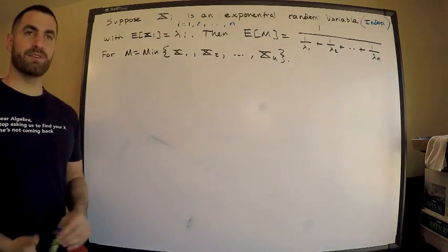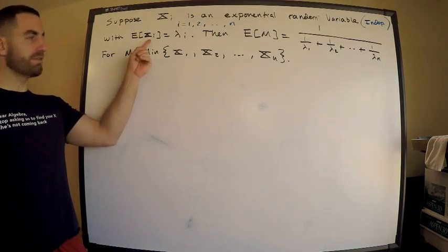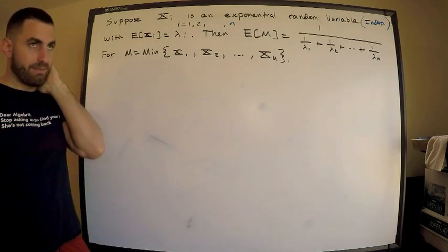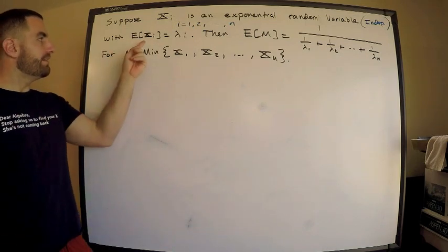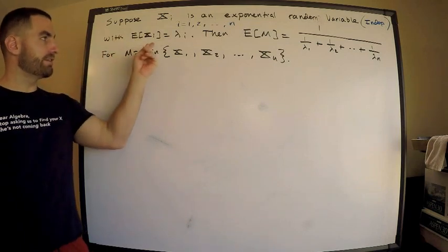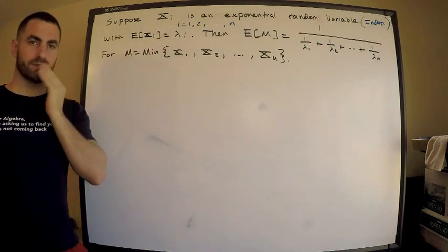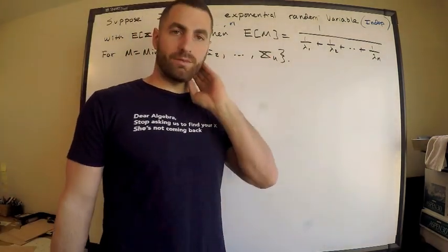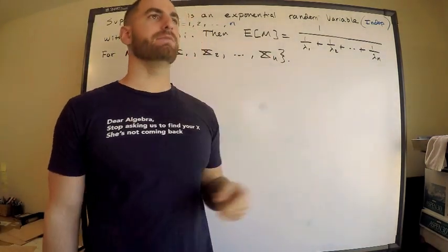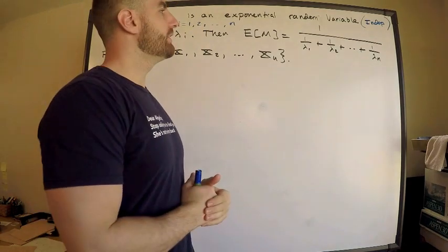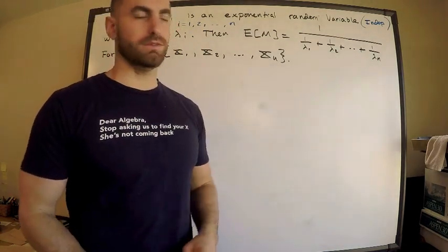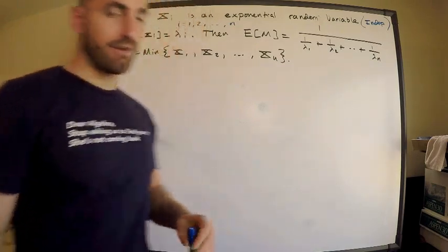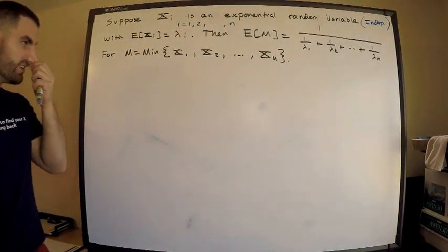Part of my assumption is that each of these random variables has expectation lambda_i for each xi. What's the conclusion? The conclusion is that the expected value of M, where M is the minimum of all these independent random variables, is equal to this business here. Looks kind of complicated, confusing, but it's really not that bad, not that hard to prove either.